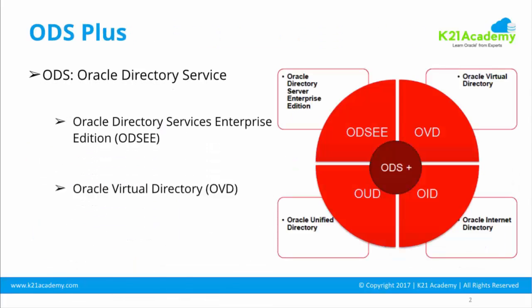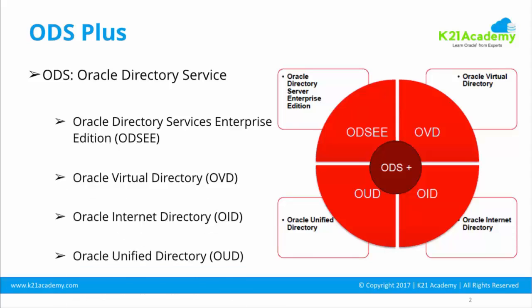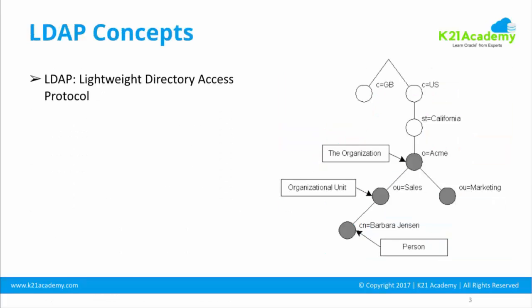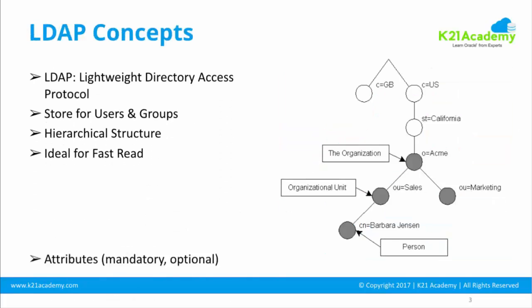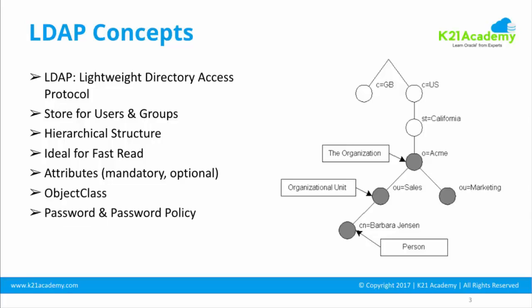So why does Oracle have four products under Directory Services? Oracle Directory Service Enterprise Edition, Oracle Internet Directory, and Oracle Unified Directory are all LDAP servers. LDAP stands for Lightweight Directory Access Protocol. LDAP servers are primarily used for storing users and groups in a hierarchical structure, and they are mainly read-heavy with minimal writes.